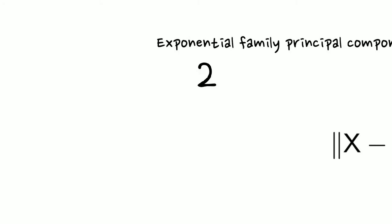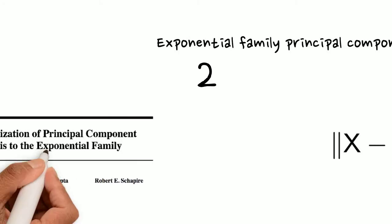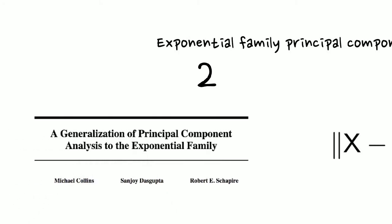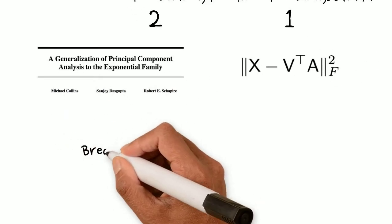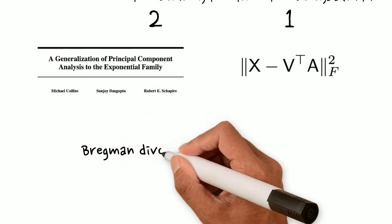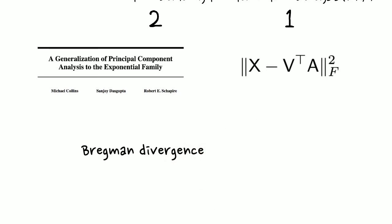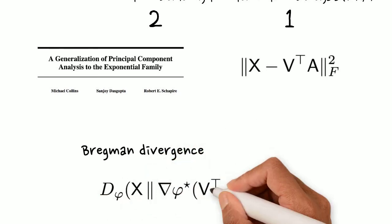Exponential Family PCA was introduced in NIPS 2002, enabling PCA on the parameters of probability distributions describing the data. It relies on a Bregman divergence, and we indicate the generator by phi. The generator of the Bregman divergence corresponds to the cumulant of the exponential family.